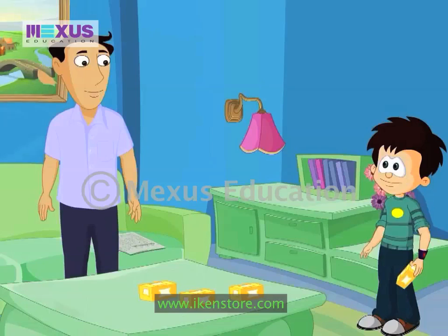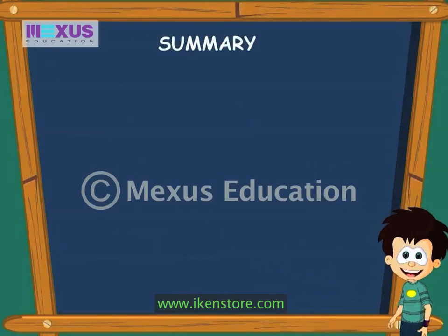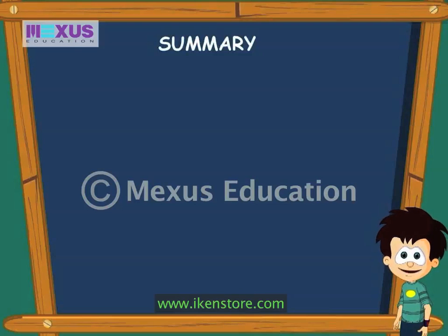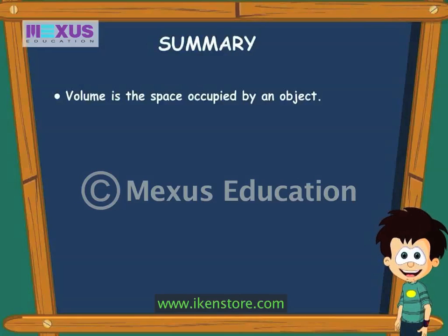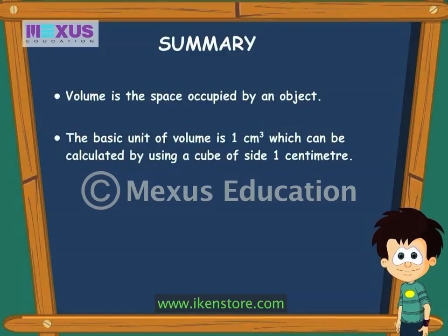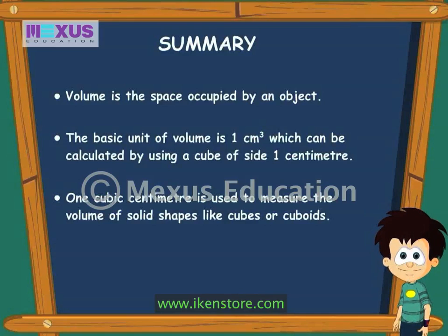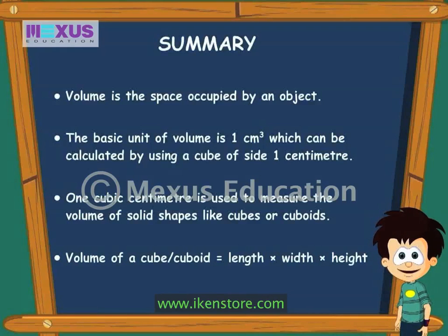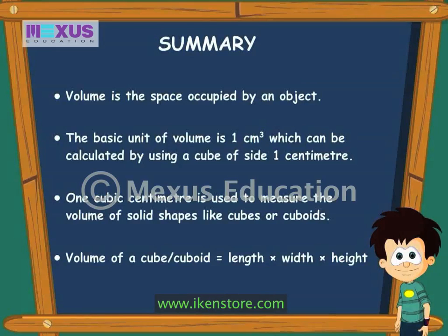Hi friends! Today, Dad helped me to pack pastry boxes and while doing so, he taught me the concept of volume. Let's revise what I learnt today. Volume is the space occupied by an object. The basic unit of volume is one cubic centimetre, which can be calculated by using a cube of side one centimetre. This one centimetre cube is used to measure the volume of solid shapes like cubes or cuboids. To find the volume of a cube or cuboid, we simply have to multiply its length, width and height. Finding the volume of an object is easy when we know the formula.